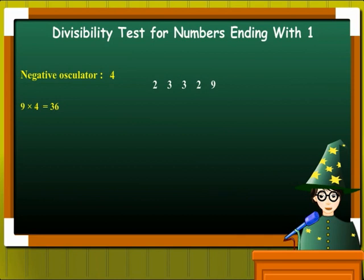Now we will subtract 36 from the remaining digits. So 2332 minus 36, this equals 2,296. We now need to repeat this again.